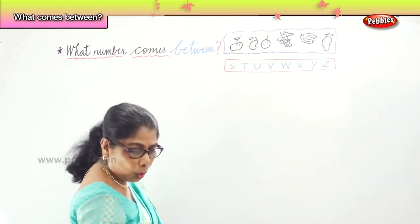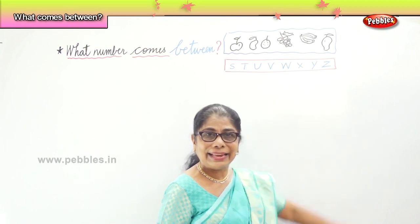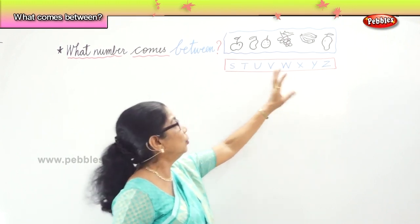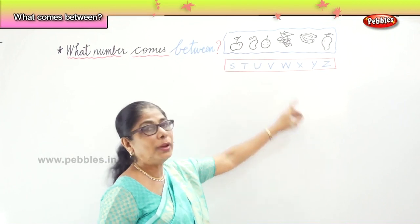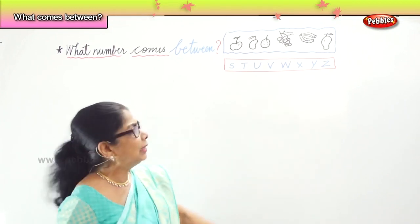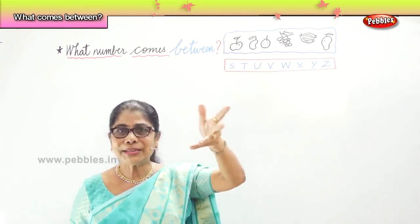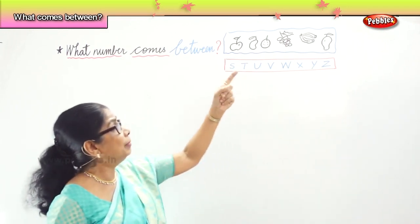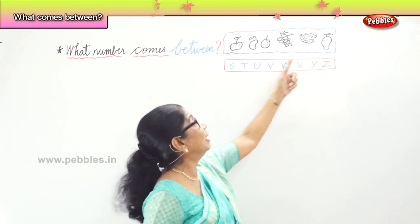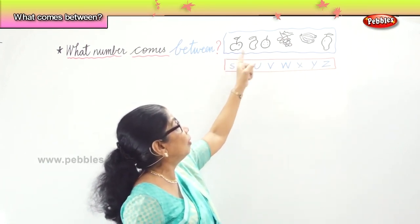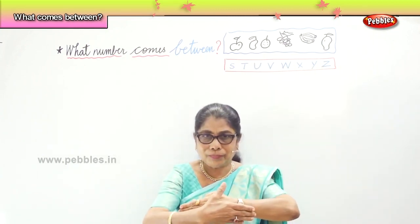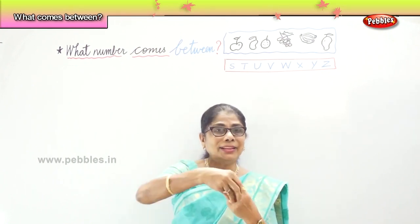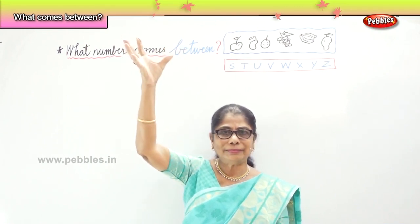What letter comes between X and Z? You will say Y. What letter comes between W and Y? What letter comes between T and U? I am also asking you: what fruit is there between the apple and the orange? You will say mango. What fruit is there between the orange and the banana? Name the fruit between the grapes and the pear? You will say banana. Name the finger that is between the pointer and the ring finger — you will say the tall man or middle finger.